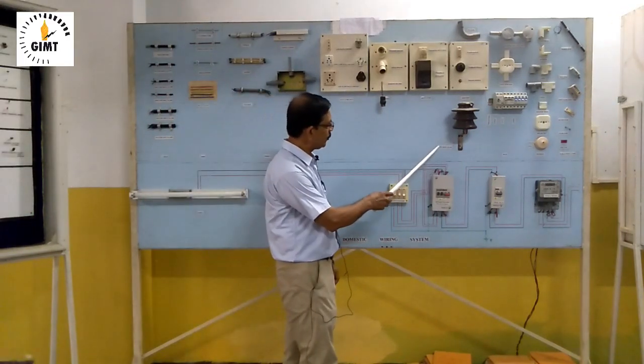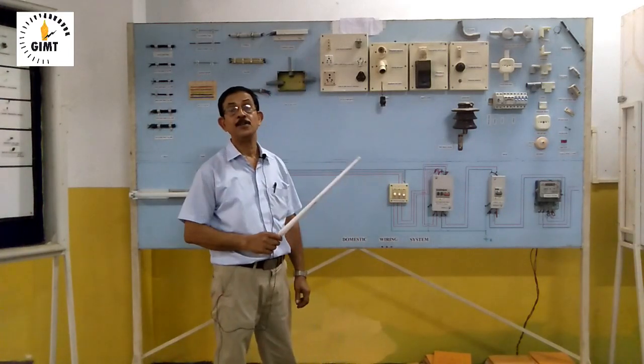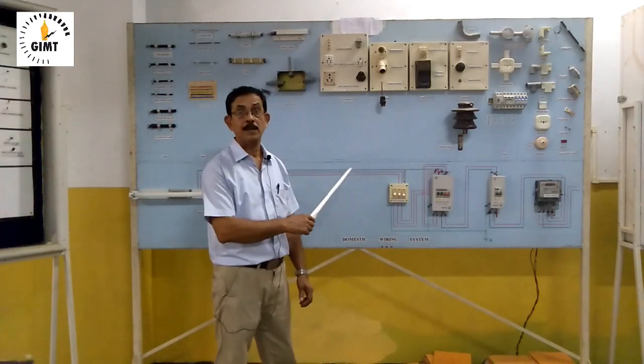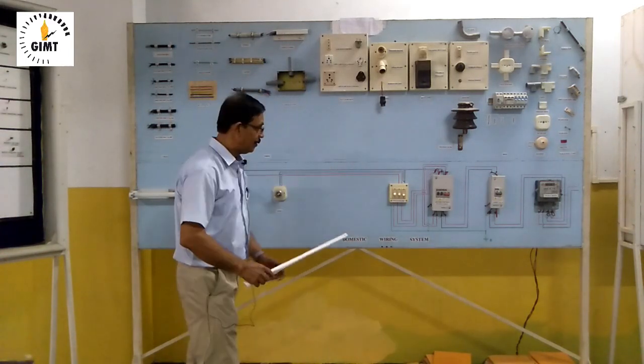In this board, one more thing we have shown, this is pin insulator. It is used in high voltage transmission line. So in domestic wiring system, this we are not using, even though it is shown here.